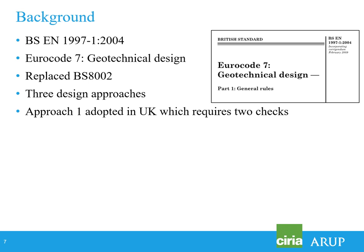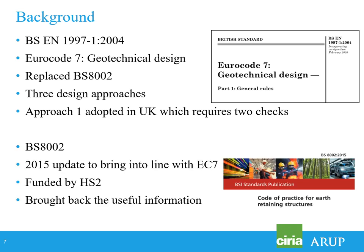Design Approach 1 requires two checks. In a rather unexpected move for industry, BS8002 was republished in 2015 — even though it had been withdrawn and replaced by EC7 — funded by HS2, the second high-speed railway in the UK. It was republished to bring it in line with EC7, and to bring back some of that useful information from the old BS that was felt to be lost in the Eurocode 7 publications.